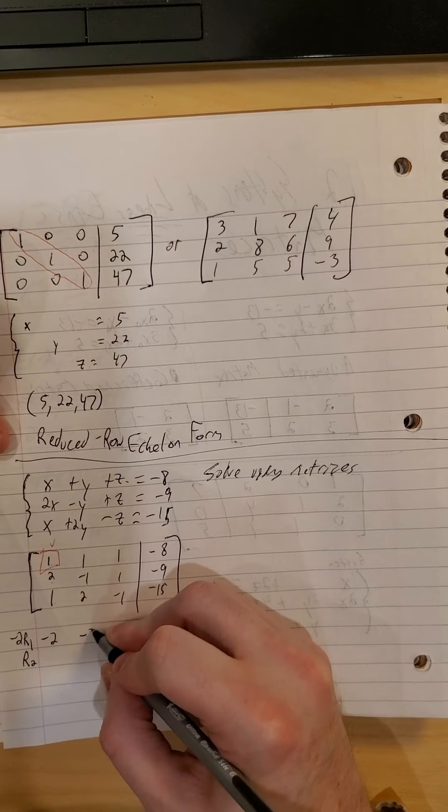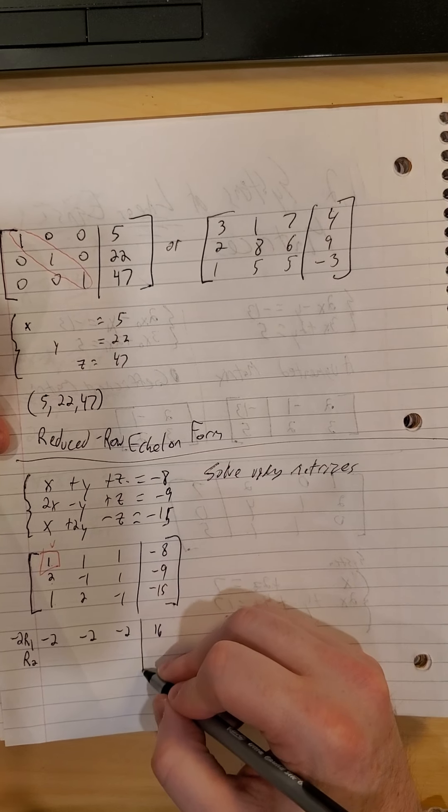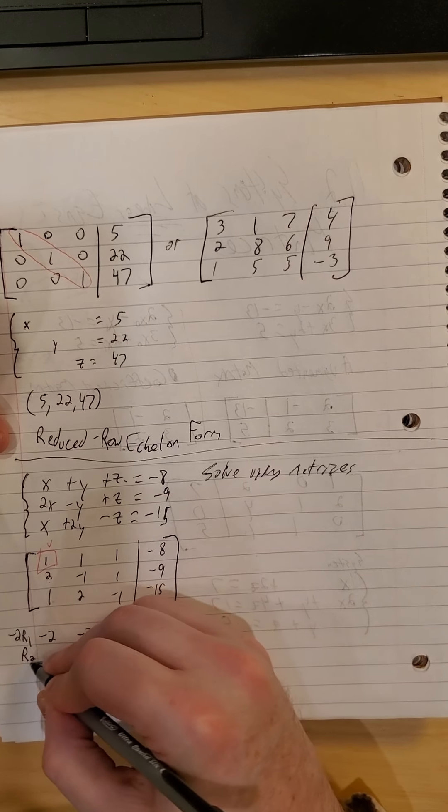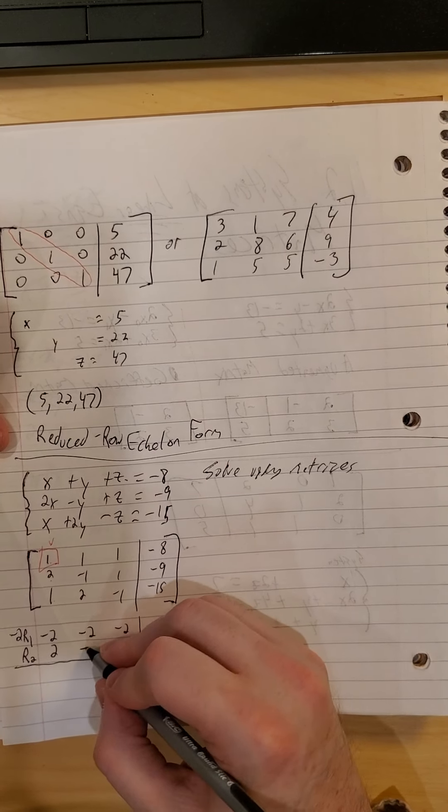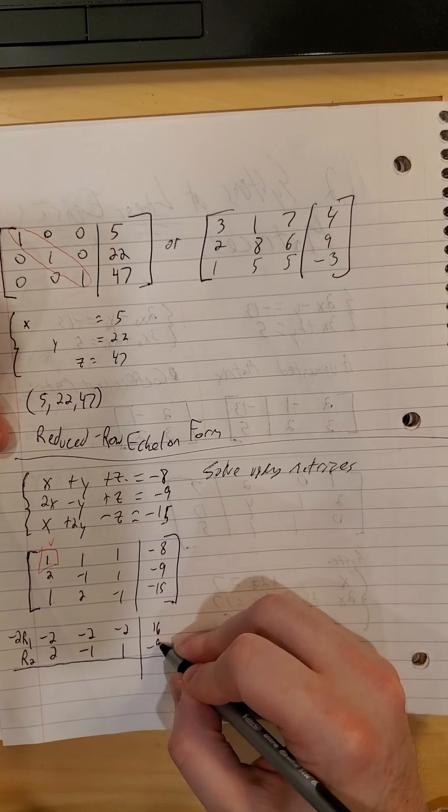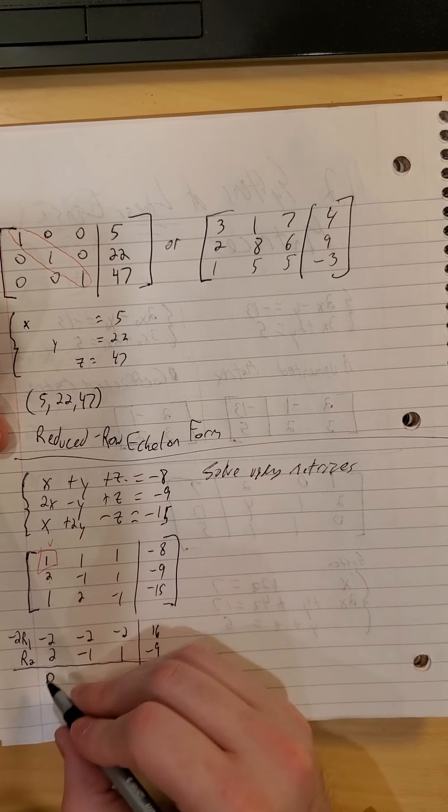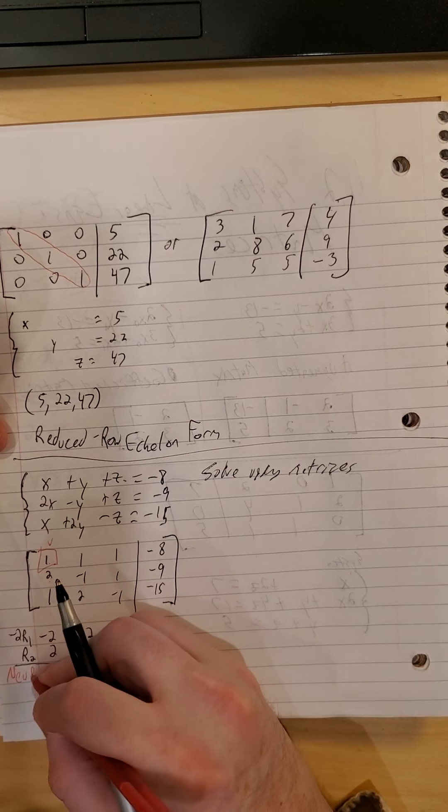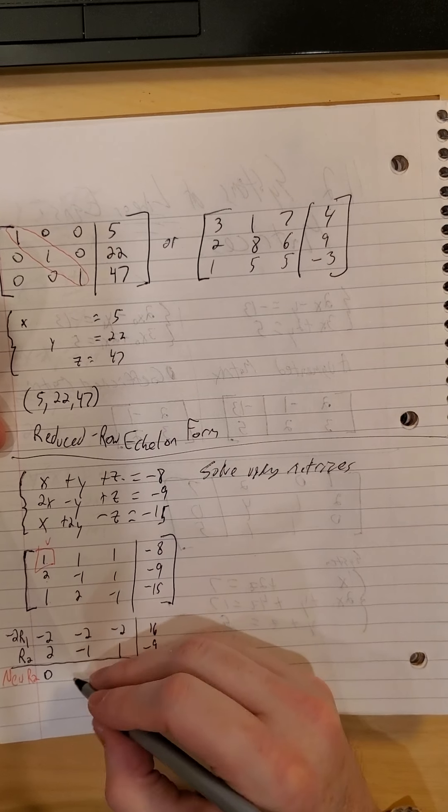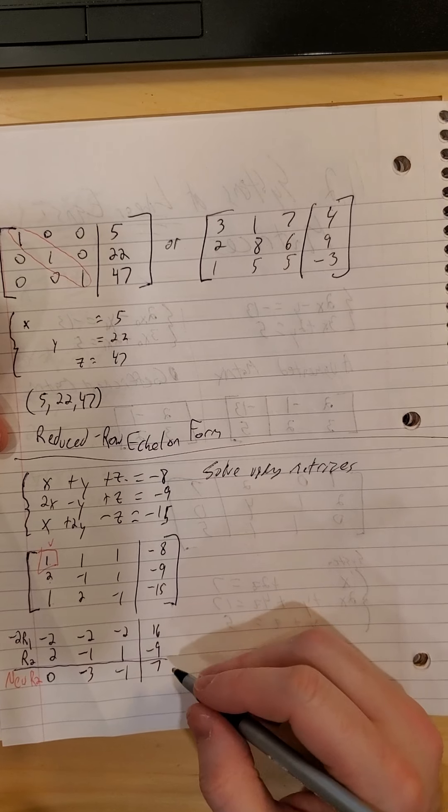So we have negative 2, negative 2, negative 2, positive 16. And row 2 stayed the same. 2, negative 1, 1, negative 9. There's that zero we were after. So this one is going to be our new row 2. So we have a zero, a negative 3, a negative 1, and a positive 7.